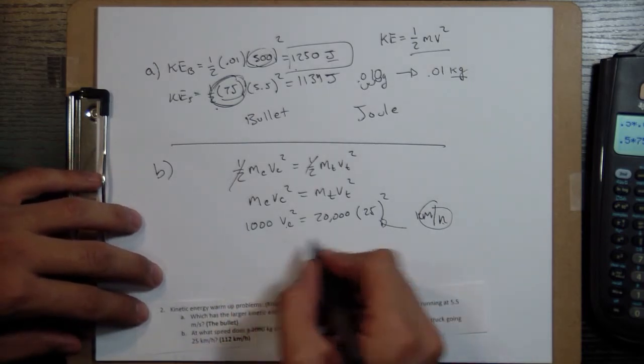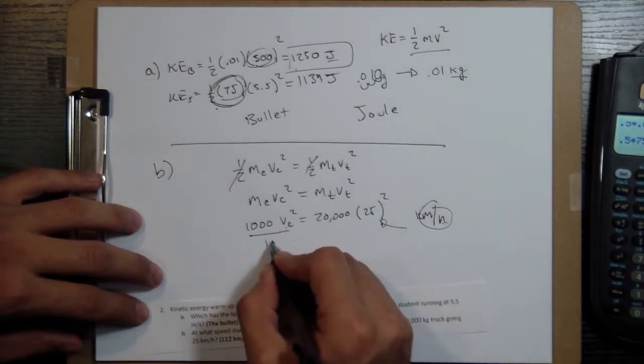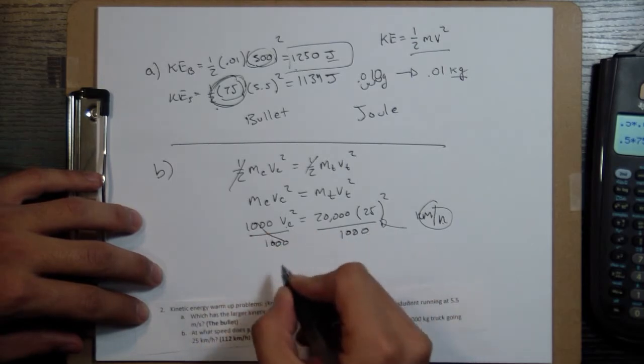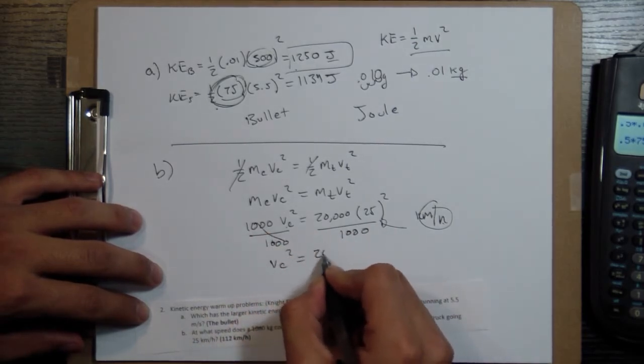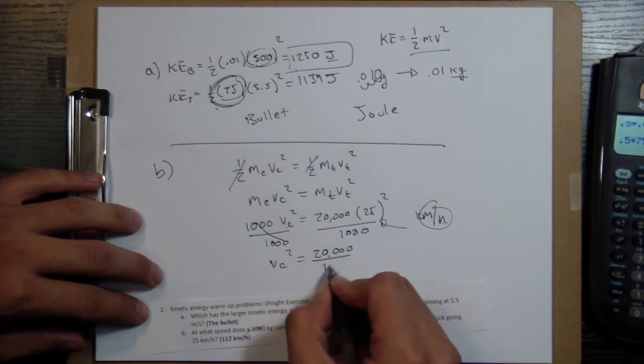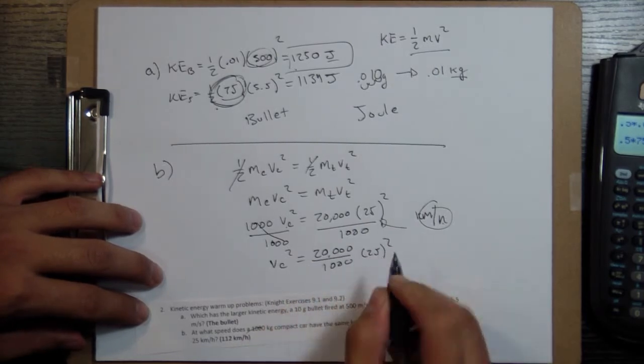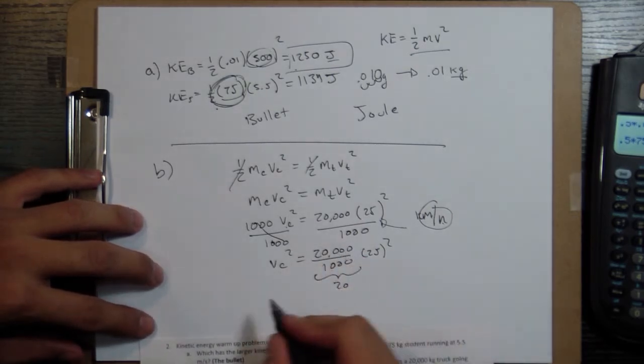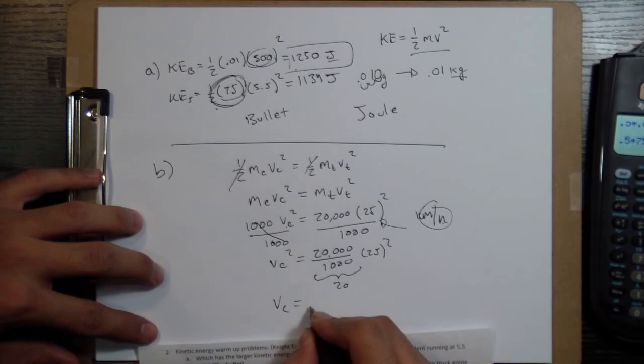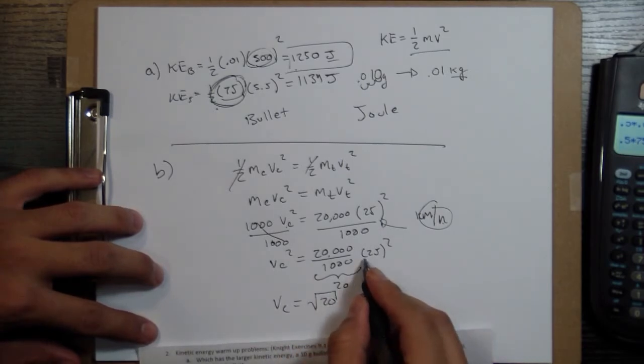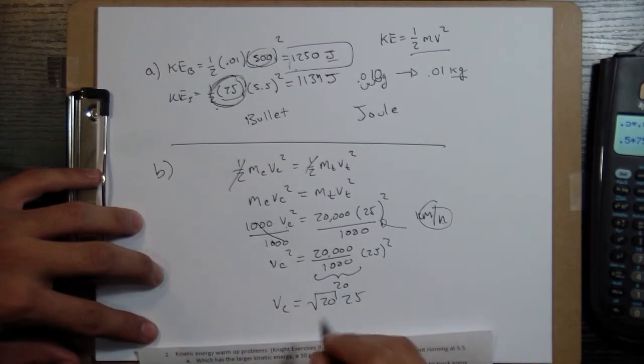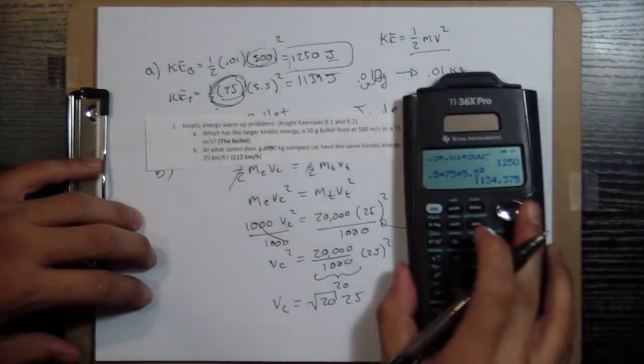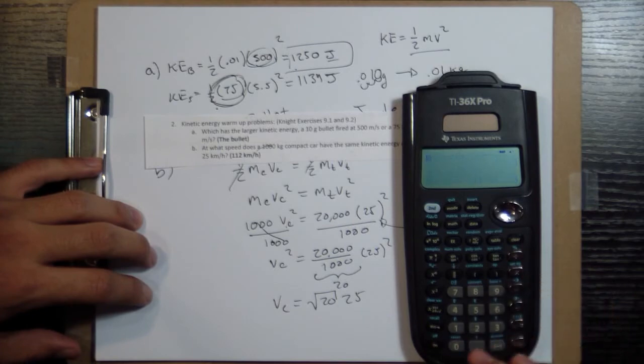And I want to isolate VC, so I'm going to divide by 1,000, divide by 1,000, here and there, cancels. 20,000 divided by 1,000 is going to be 20. So when I take a square root of both sides, I'm going to get VC is equal to square root of 20. And if I take a square root of 25 squared, I'm just going to give back my 25. So then if I figure out what that is, it's going to be square root of 20 times 25.